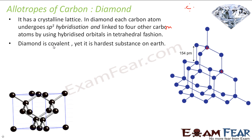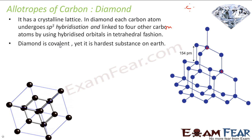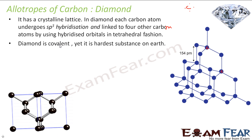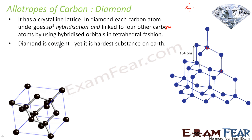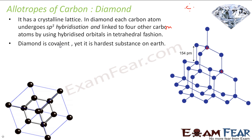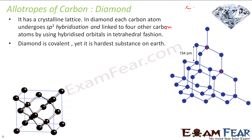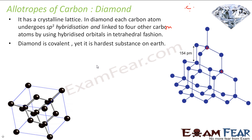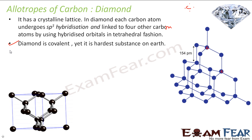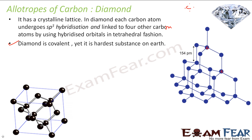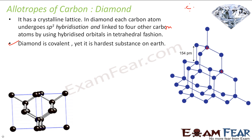Diamond is covalent, yet very hard, because the structure is such that all carbons are linked forming a gigantic three-dimensional structure. This is a common exam question — diamond is covalent yet very hard — the answer is that its covalent bonds form a mammoth three-dimensional structure, making it very hard.